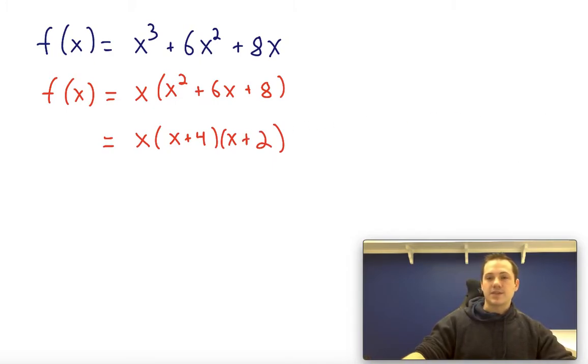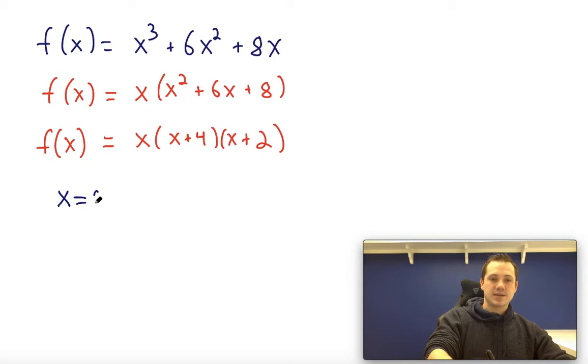Now finding the zeros for each of these requires us to set each of these factors equal to 0. So our factors here would be x, so we'd have x equals 0. We'd also have x plus 4, which would lead us to x equals negative 4. And we would have x plus 2, which would lead us to x equals negative 2.